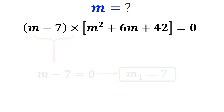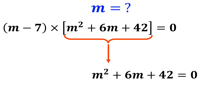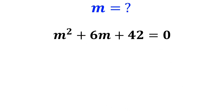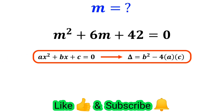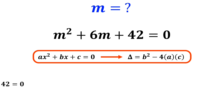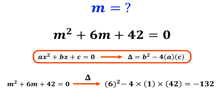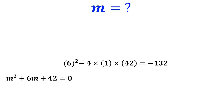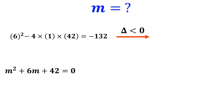In the next step, we set m squared plus 6m plus 42 equal to zero. In a quadratic equation, the value of delta is found using the formula delta equals b squared minus 4ac. So the value of delta for this equation is 6 squared minus 4 times 1 times 42, which is equal to negative 132. Since delta is less than zero, this equation has no real solutions.